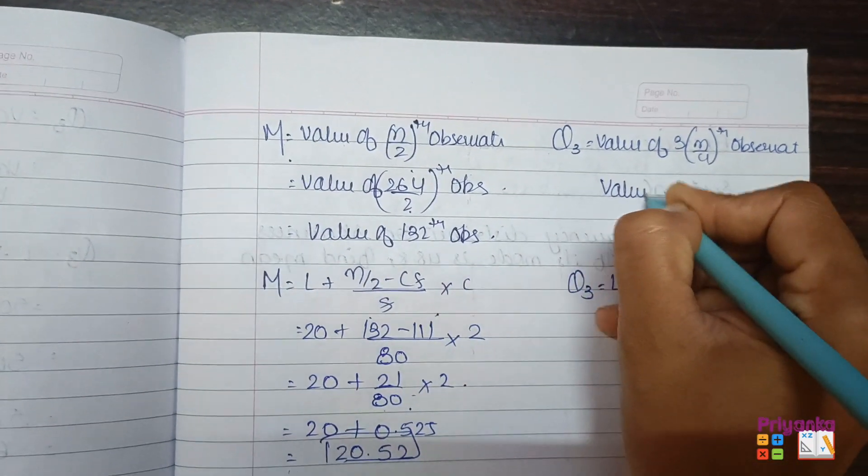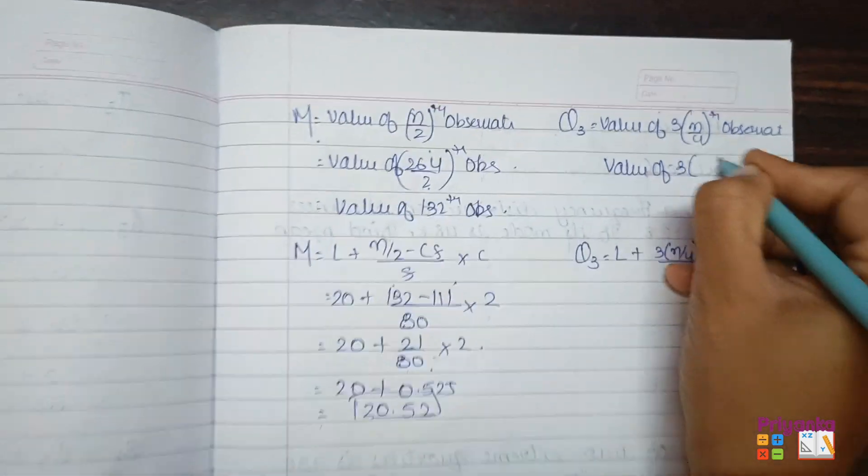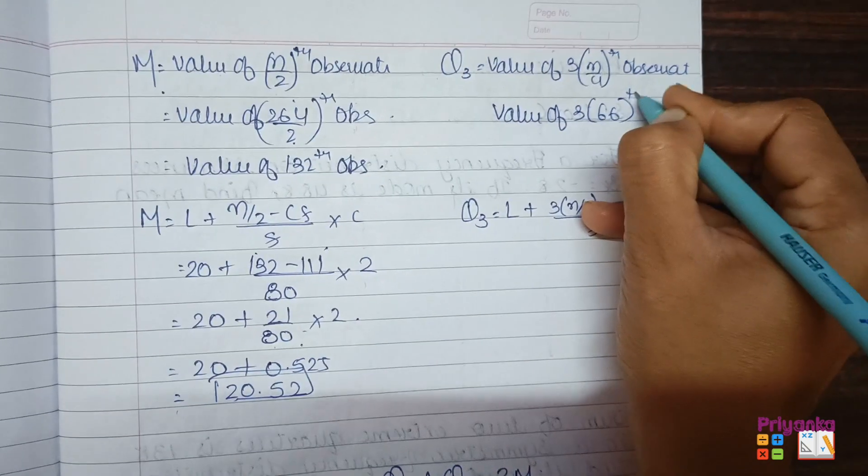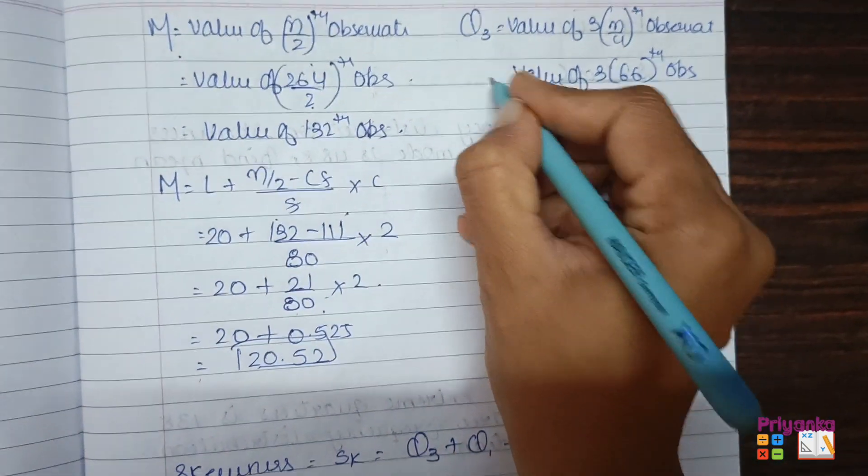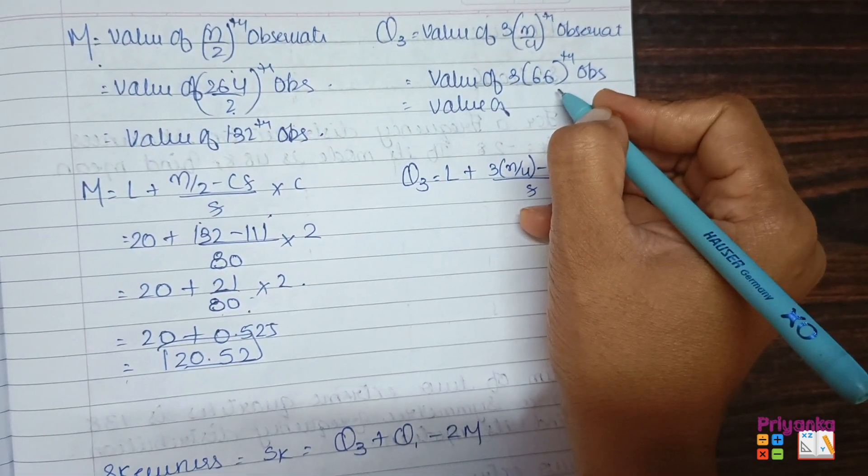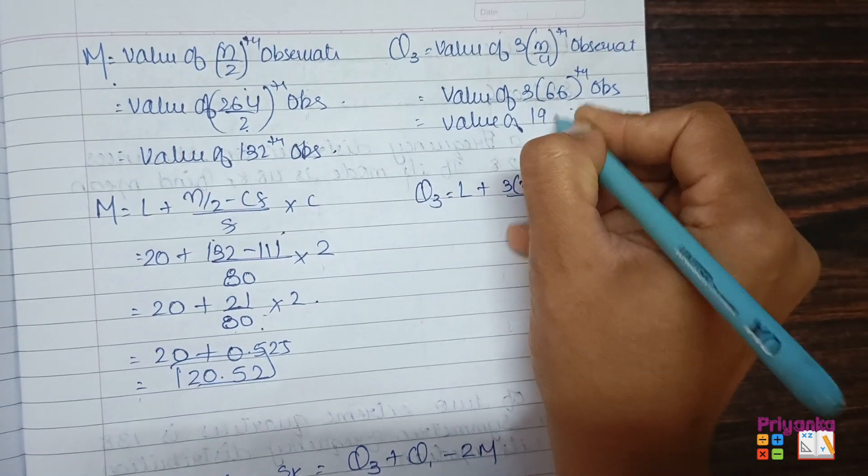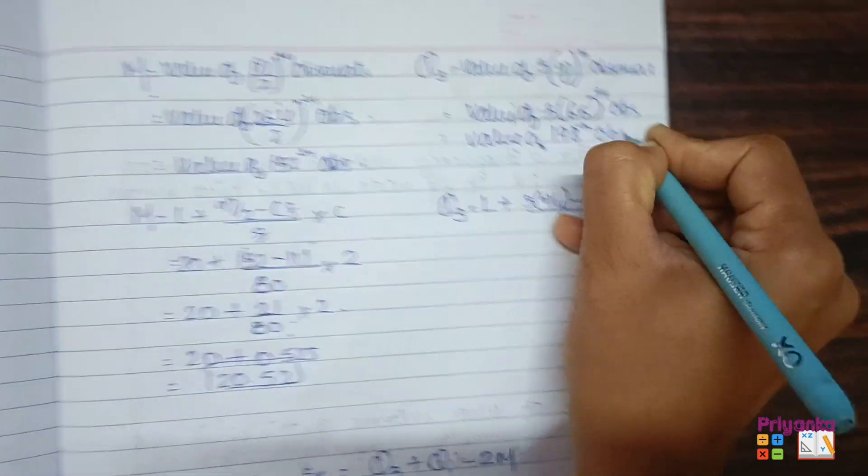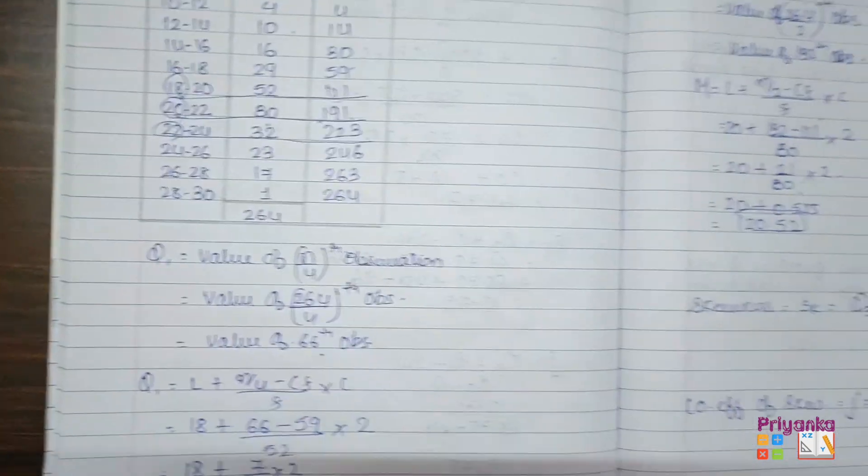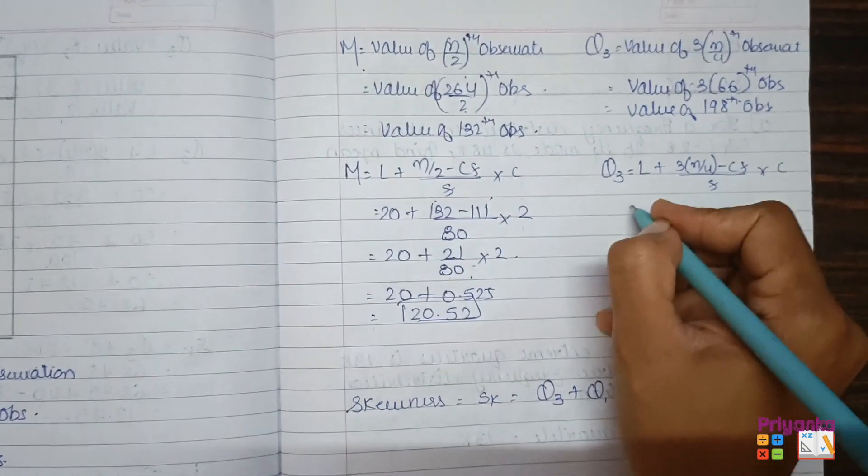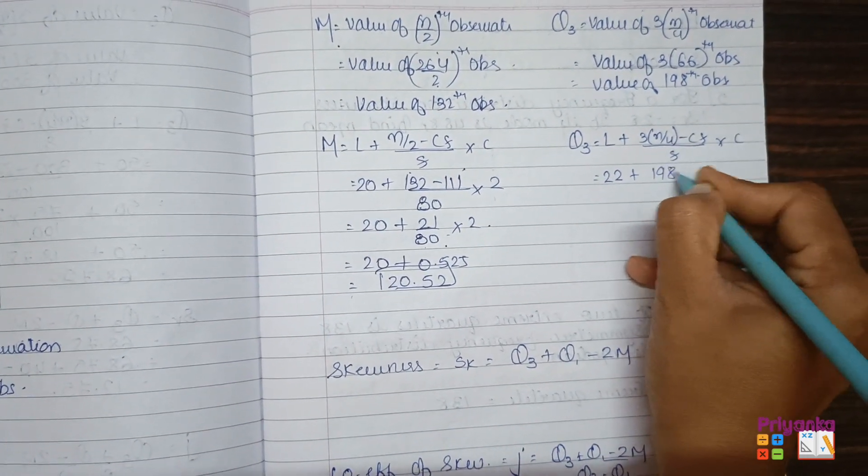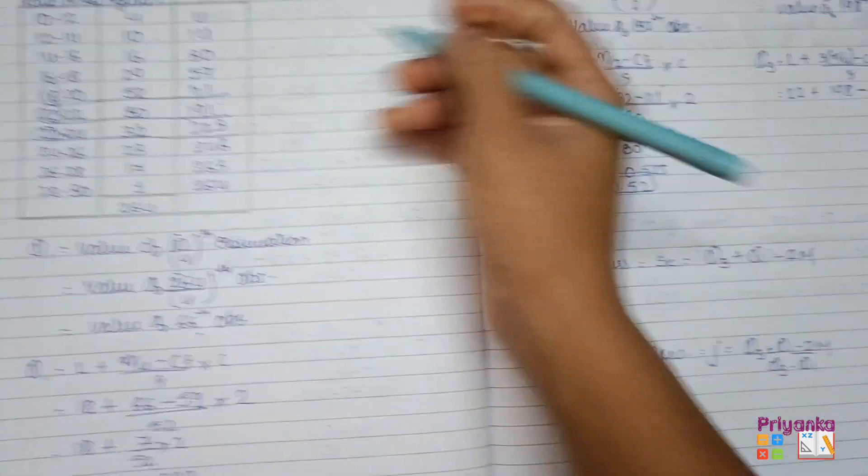Next we'll find out Q3. So again value of 3N upon 4, I'm taking directly from the Q1, which is 66th observation. So the value of 3 into 66, you will get 198th observation. Come to the CF, 191 comes. So the value of 198 will be in 23. So lower boundary point is 22 plus the value of this equation is 198, its upper number will be CF 191.